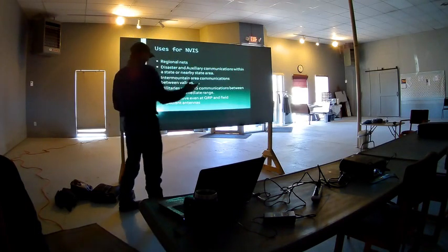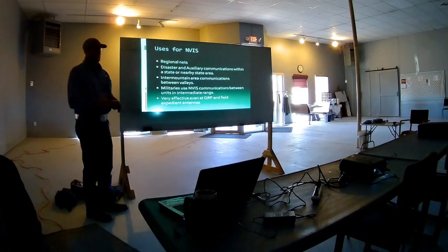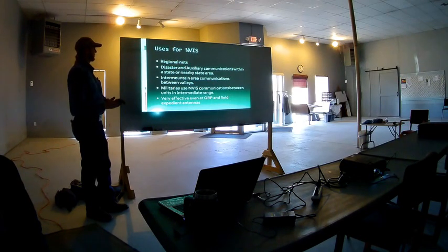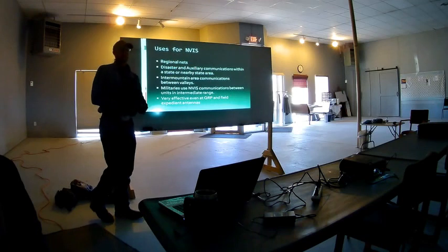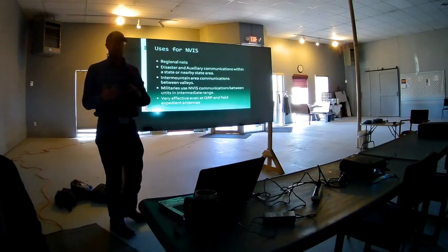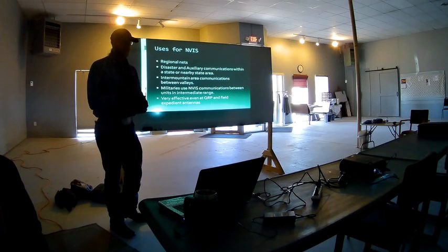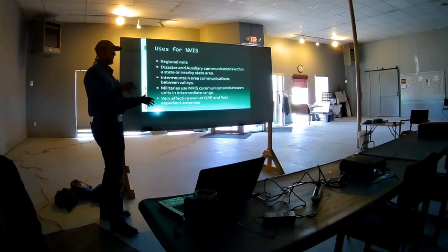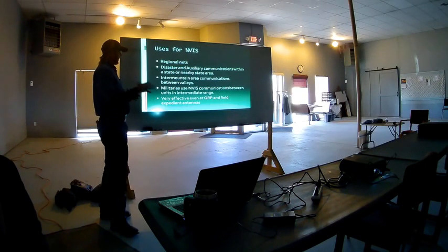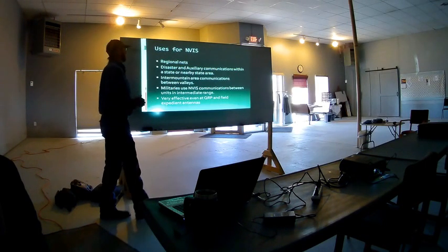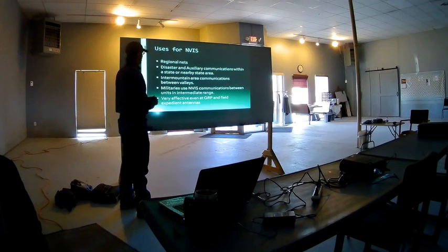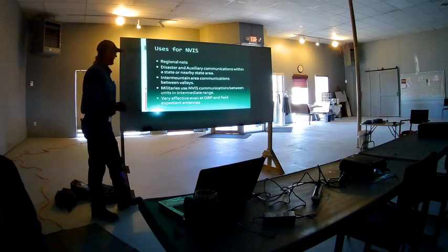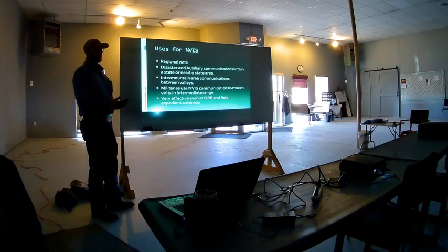Just like the military, we want to do intermediate communications. Uses for NVIS include regional nets — like the Roadrunner Net or the Panhandle Traffic and Emergency Net — covering New Mexico, Texas, maybe into Arizona and Colorado. NVIS is also very good for disaster and emergency communications within a state or nearby state area, like hurricanes or earthquakes — usually localized areas.